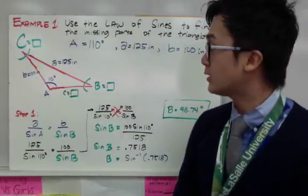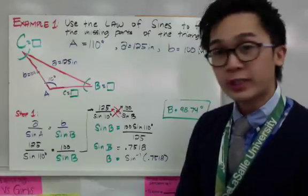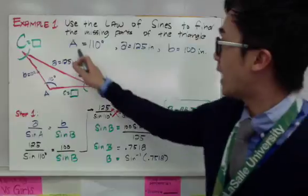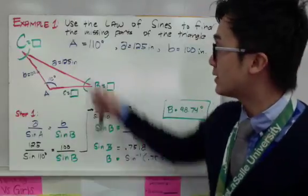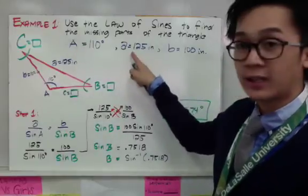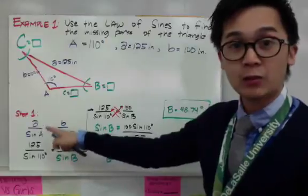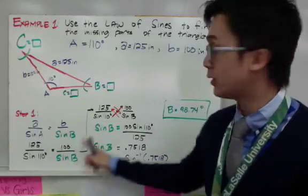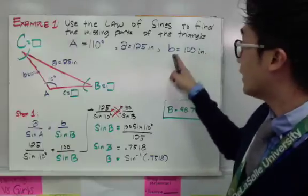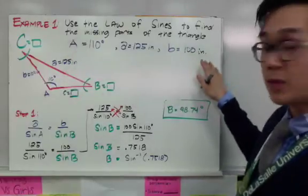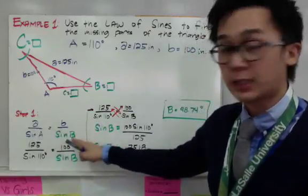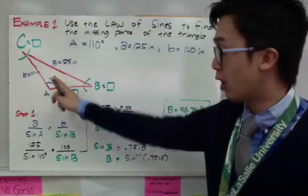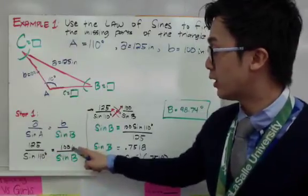The first step is to find a strategy on how to use the law of sines — you need to think before setting up the formula. You need to figure out which set of letters is complete. In this case, I have angle A and side a, so I'll use the formula with a over sine A as the first ratio. You need a complete set to start the law of sines. The second proportion uses side b, which is 100 inches. So I have a over sine A equal to b over sine B, giving me 125 over sine 110 equal to 100 over sine B.